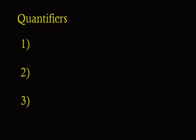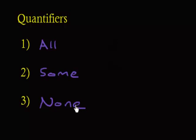Hello and welcome to our video on quantifiers. We're going to start with going over the three basic quantifiers. Our first quantifier is going to be all, our second quantifier will be some, and our third quantifier will be none. Now none could also be like no one or nothing, and all could also be worded as everyone. But we're just going to stick with these three basic quantifiers.